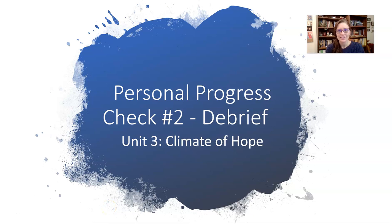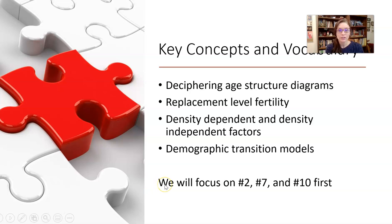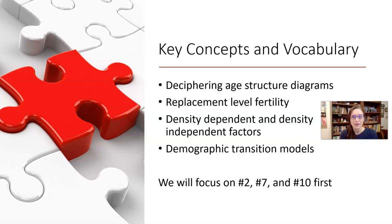Hello, AP Environmental Scientists. I'm Ms. Maycutt from Ballard High School, and I will be debriefing the Personal Progress Check No. 2 with you from Unit 3 Climate of Hope. We're going to start with the questions folks had the most difficulty with, then go over the remainder. Key things to think about are deciphering age structure diagrams, replacement level fertility, density dependent versus density independent factors, and the demographic transition models.